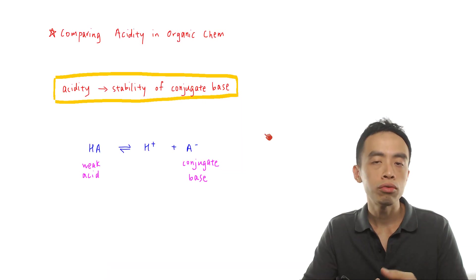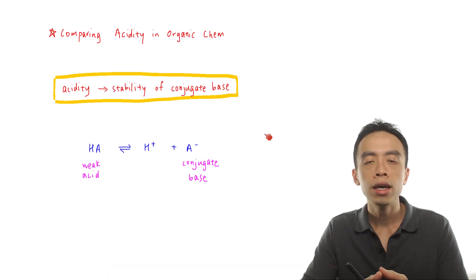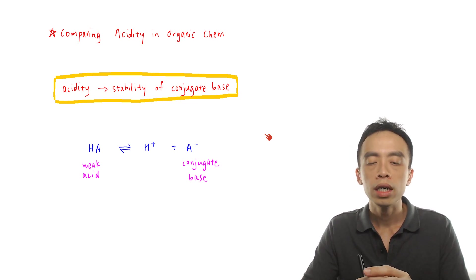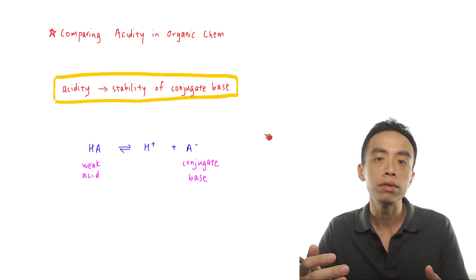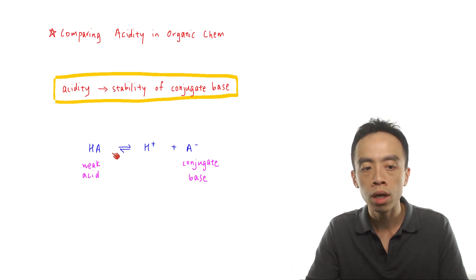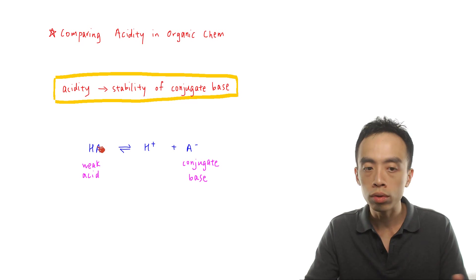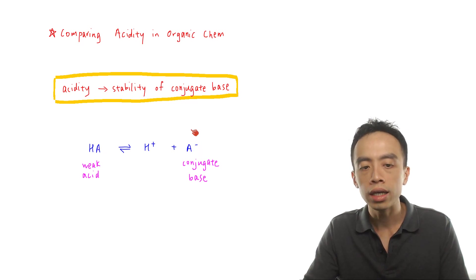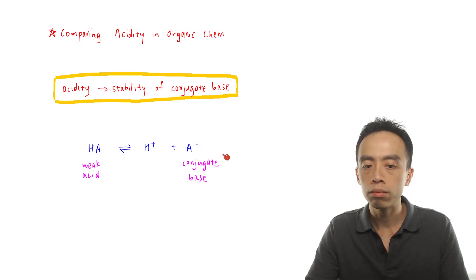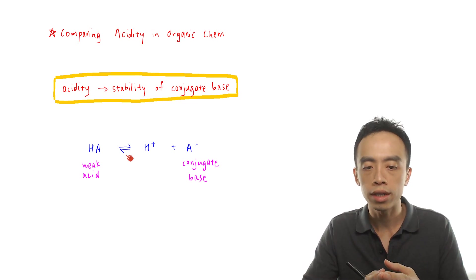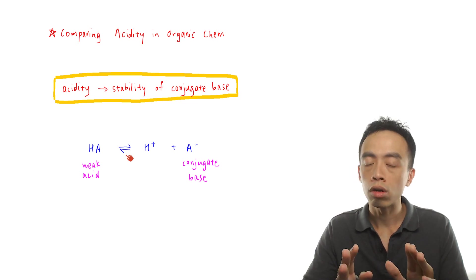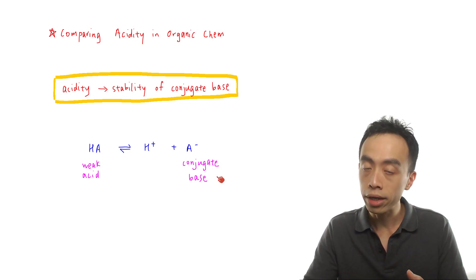In organic chemistry, when we want to compare acidity, the concept that we use is the stability of conjugate base. If I look at this dissociation — a very simple dissociation involving a weak acid HA — the weak acid is a proton donor, so in the forward direction it can donate H+, forming conjugate base A-. Because it is a weak system, this is a reversible reaction.